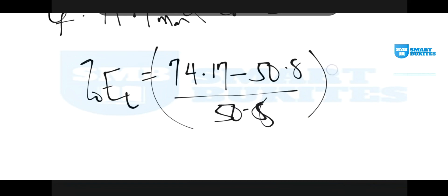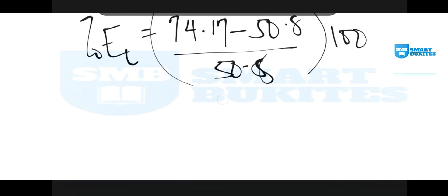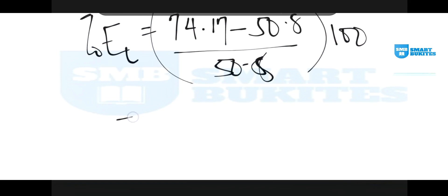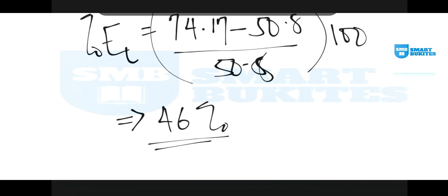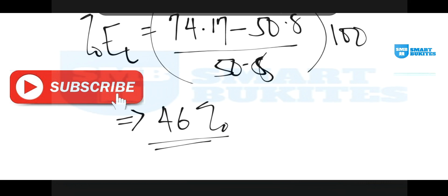When you calculate this in your calculator, the ductility in percentage elongation is 46%. Hope you enjoyed the video. Kindly subscribe to this channel if you haven't done so, and press the bell icon so that you'll be notified whenever we upload our next video. See you in the next video, bye bye.